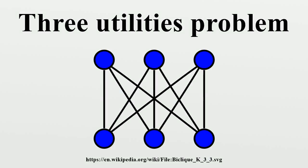The classical mathematical puzzle known as the three utilities problem, the three cottages problem, or sometimes water, gas and electricity, can be stated as follows. Suppose there are three cottages on a plane and each needs to be connected to the gas, water, and electricity companies, without using a third dimension or sending any of the connections through another company or cottage.